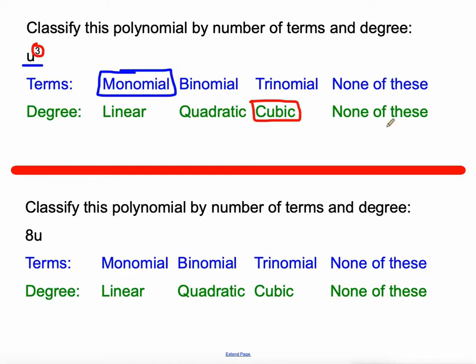There are more names after that: quartic, quintic. But on IXL it just talks about none of these if it's above a degree of three. Another degree would be if there is no variable, we would call that a constant. All right, moving on here.